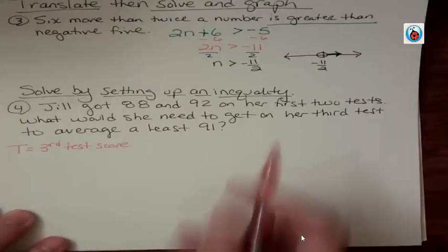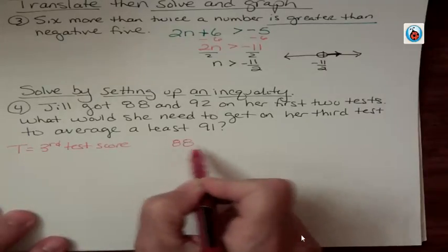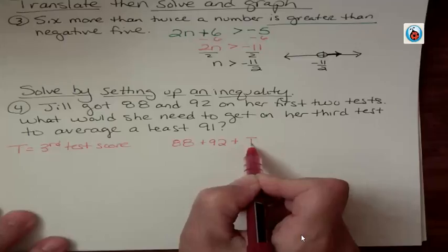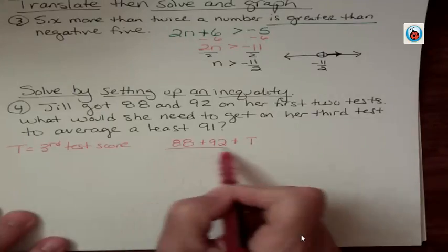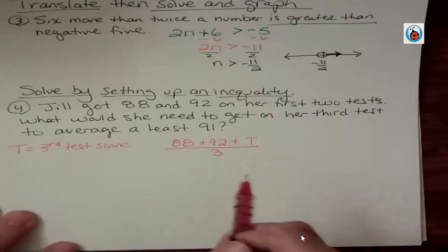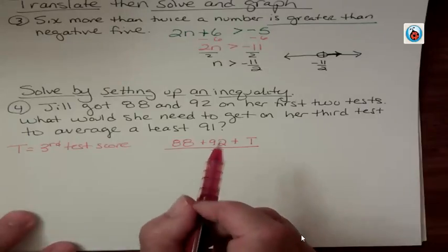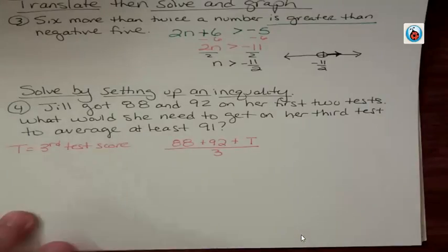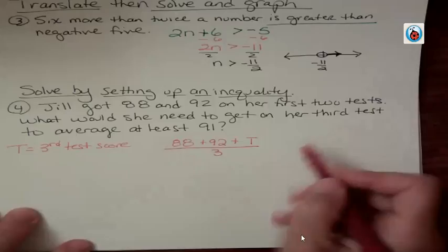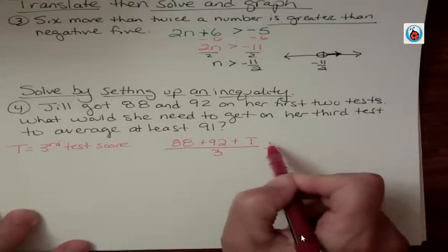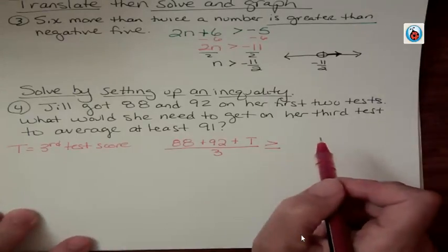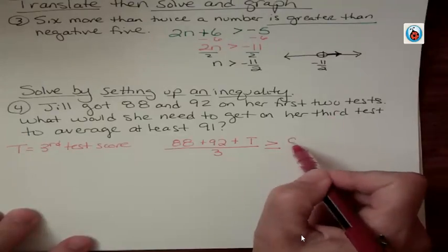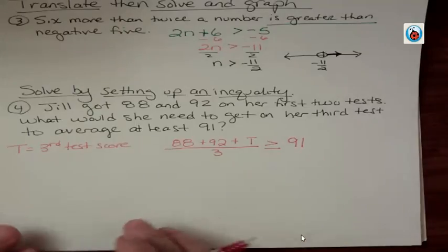Now we know that her first one was 88. And her 2nd one was 92. And her 3rd one we don't know. We're calling it T. And we want to add those up and divide by 3 to get an average. Now we want that average to be at least 91. What does at least mean? It means that it could be exactly 91 or it could be greater than. At least means greater than or equal to.